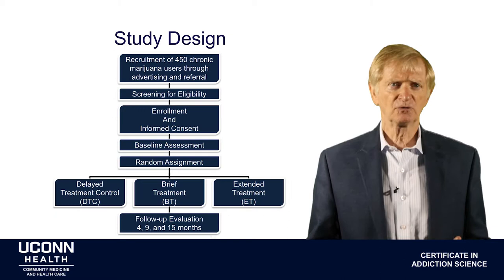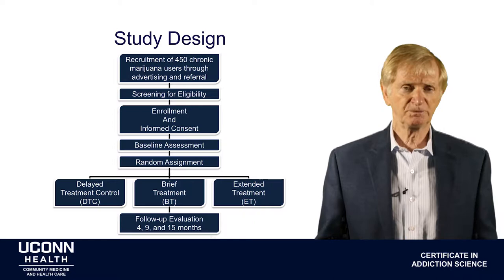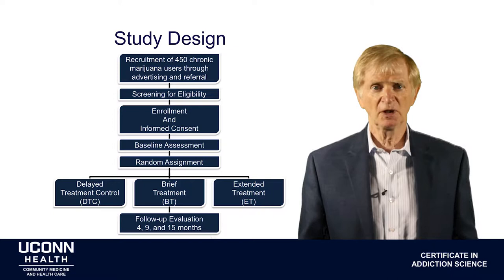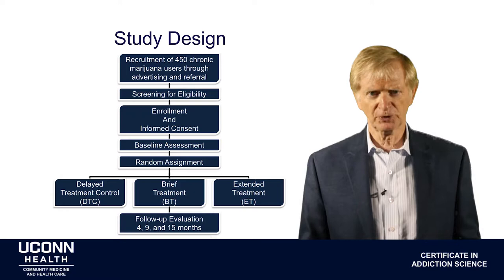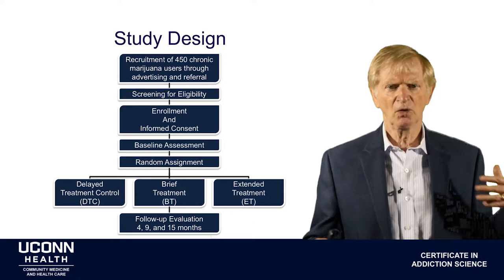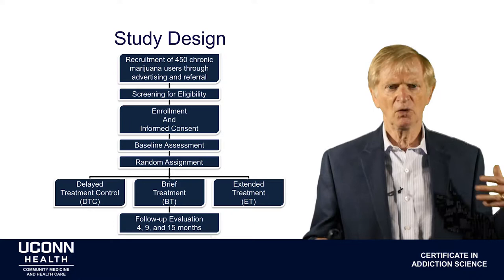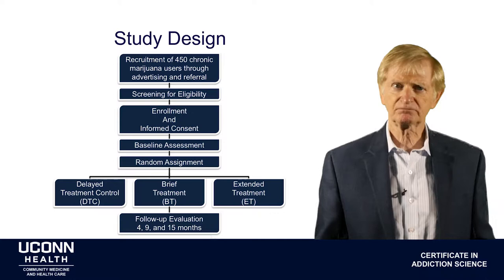We recruited 450 chronic marijuana users through advertising and referral in three U.S. cities. Once people saw the advertisement or were referred, they were screened for eligibility. We wanted to make sure they were regular marijuana smokers, but also that they weren't using heroin, amphetamines, or cocaine, and weren't addicted to alcohol or other drugs, because that might mask the effects of treatment directed specifically at chronic marijuana smoking. So we were looking for fairly pure marijuana smokers.